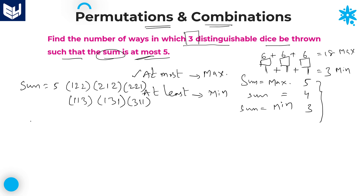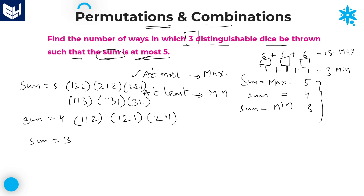For sum equal to 4, the possible cases are: (1,1,2), (1,2,1), and (2,1,1) — only 3 possible cases. For sum equal to 3, there is only one case: (1,1,1). Now counting all possible cases: 6 plus 3 plus 1 gives a total of 10 ways.